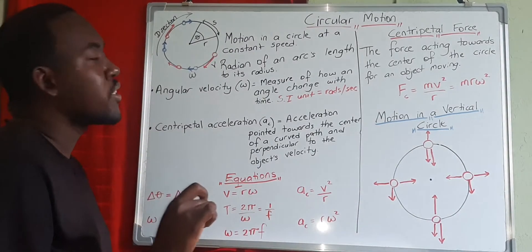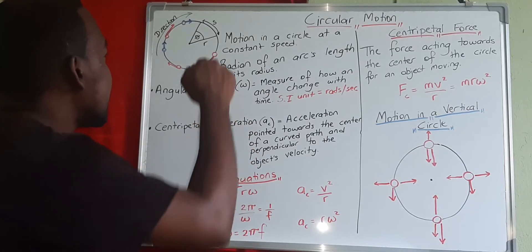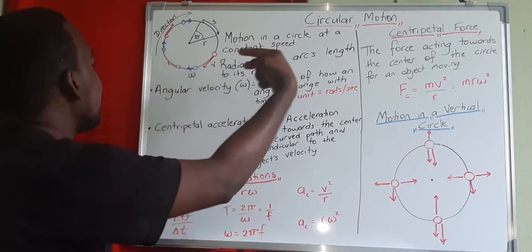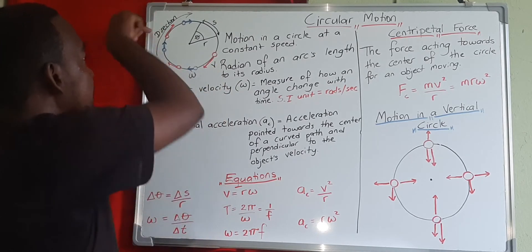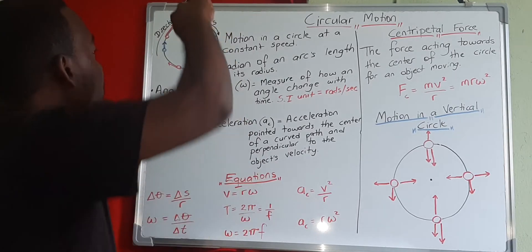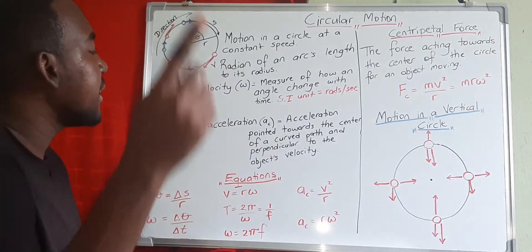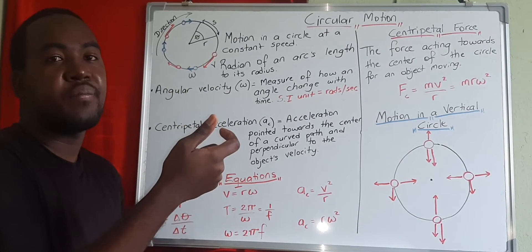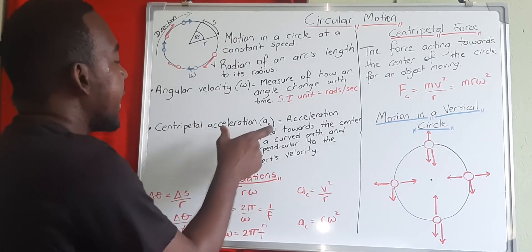Even though the speed magnitude is constant, the direction is always changing. If an object is going down it has a negative velocity; going left is negative; going up is positive; going right is positive. Because there is a consistent change of direction as the object moves around the circle, that means we have an acceleration — even if the magnitude of velocity stays the same. The direction change is what creates acceleration.